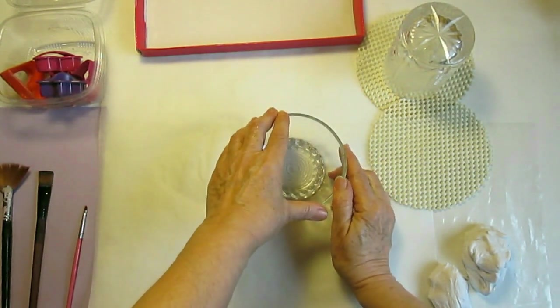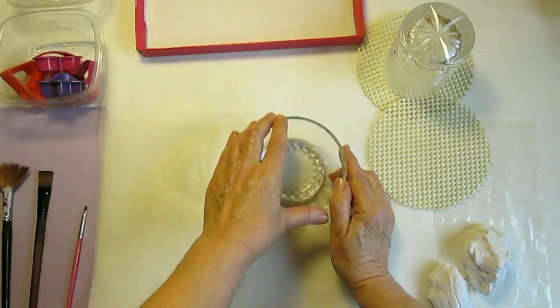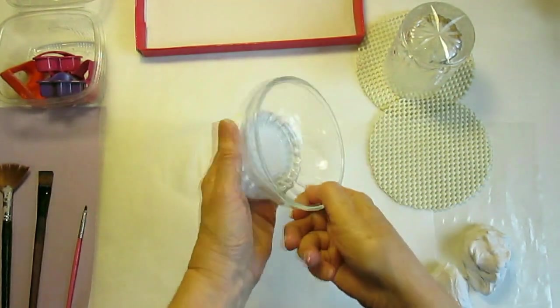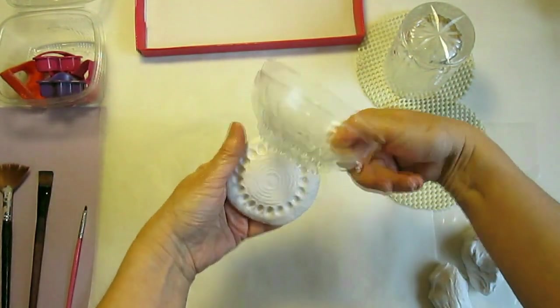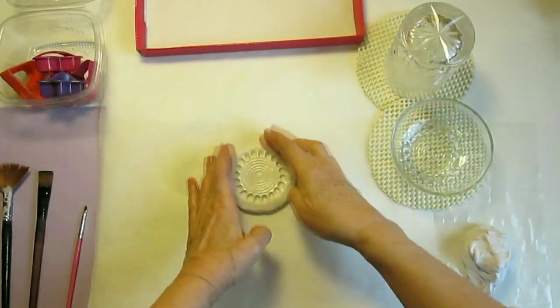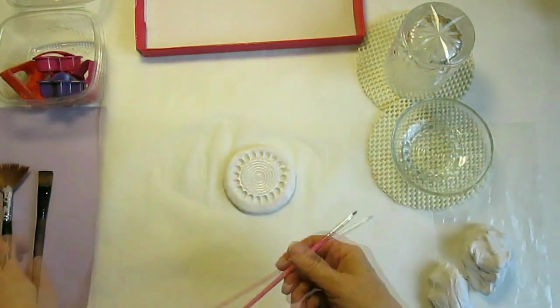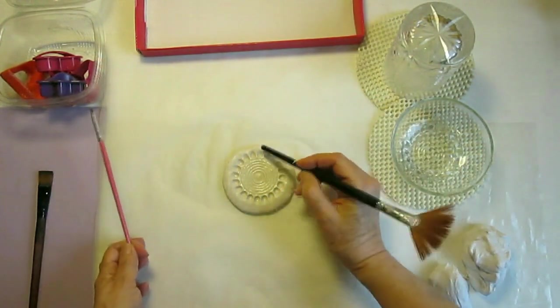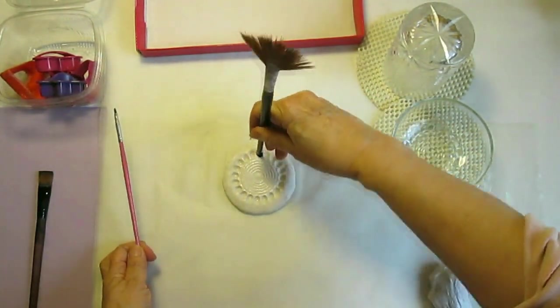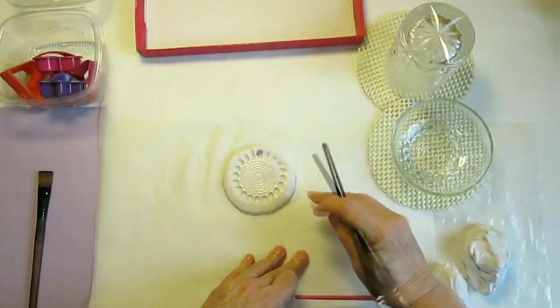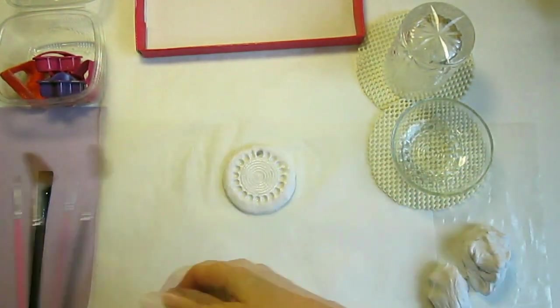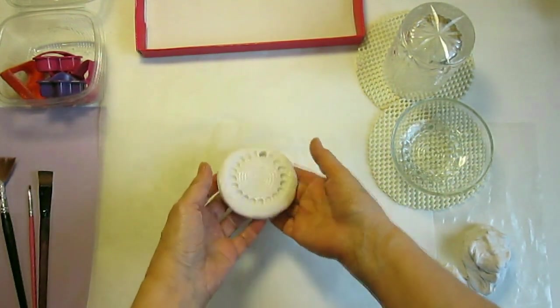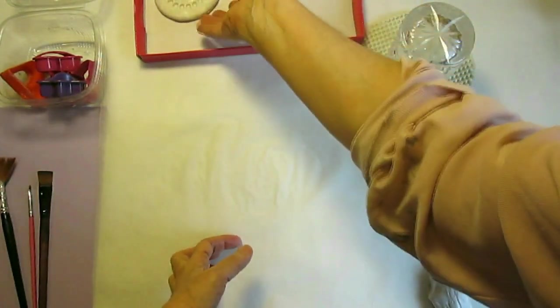Don't forget this is all hand work, no machine. Carefully take it off and here we go. Now with the end of this brush I will make one hole for the cord.